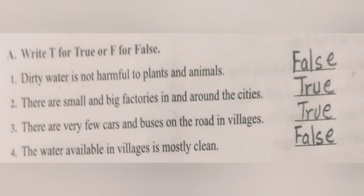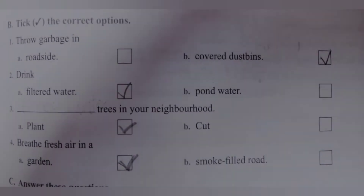Now we are doing Worksheet 1. Part A: Write T for True or F for False. First: The environment does not affect a living thing — False. Second: We may fall sick if we breathe in polluted air — True. Third: There are traffic jams in villages — False. Fourth: The air is fresh and clean in villages — True.